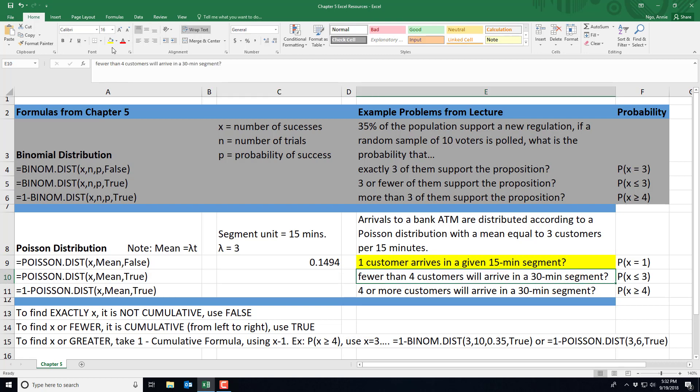In our second scenario what we're interested in is fewer than four customers arriving in a 30 minute segment. So first we want to write the probability of what does it mean when it says fewer than four customers. Here fewer than four customers is the same as saying the probability that x is less than or equal to 3, because fewer than 4 does not include 4.